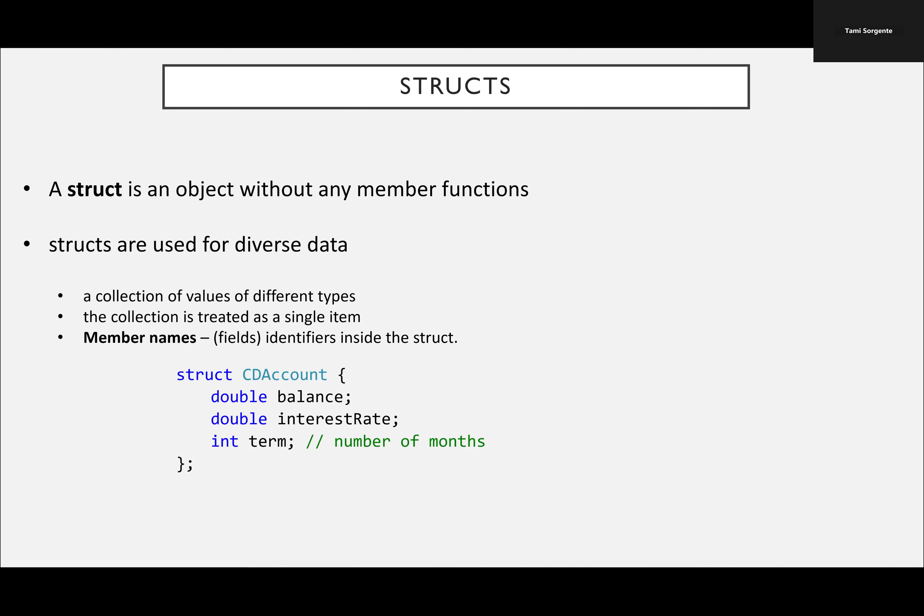Structs are going to be defined globally at the top of your program so they can be used throughout your program. You use the keyword struct and then put the name of it. In this case, the struct is called CD account. Then you put whatever kind of data — mixed types of data — inside. In this case, we're going to have a double for the balance, a double for the interest rate, and an integer for the term.